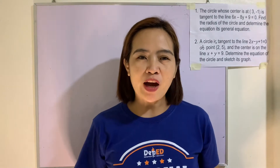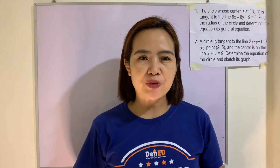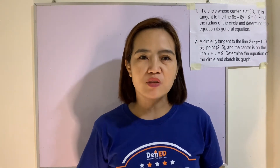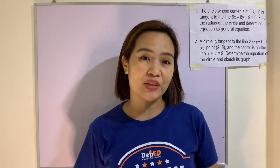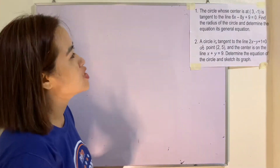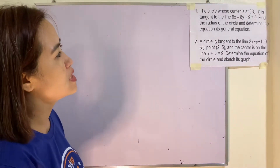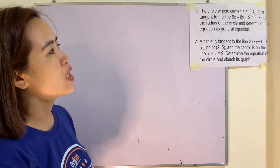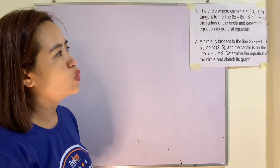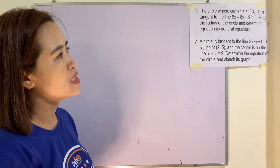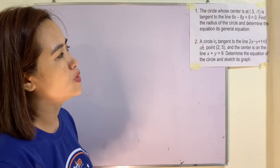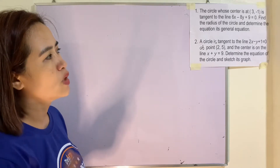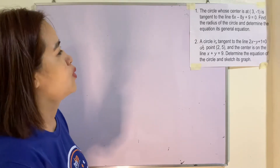Hi everyone. Our topic for today is solving situational problems involving circles. Example 1: the circle whose center is at (3, -1) is tangent to the line 6x minus 8y plus 9 equals 0. Find the radius of the circle and determine its equation in general form.